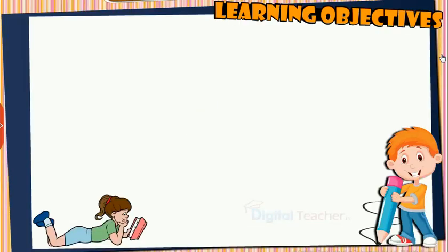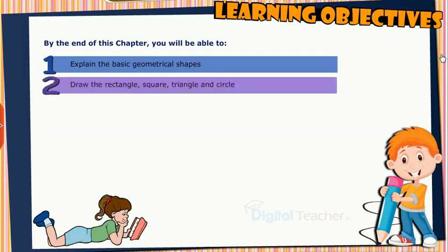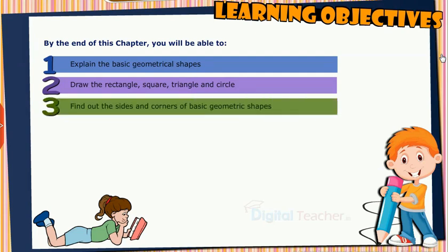Learning Objectives: By the end of this chapter, you will be able to explain the basic geometrical shapes, draw the rectangle, square, triangle and circle, and find out the sides and corners of basic geometric shapes.